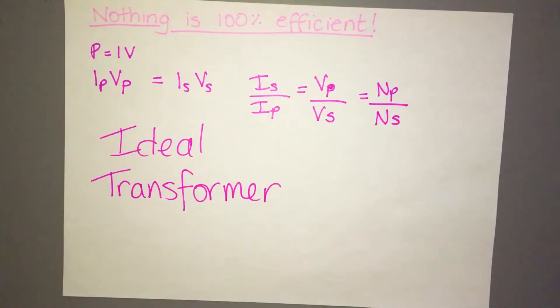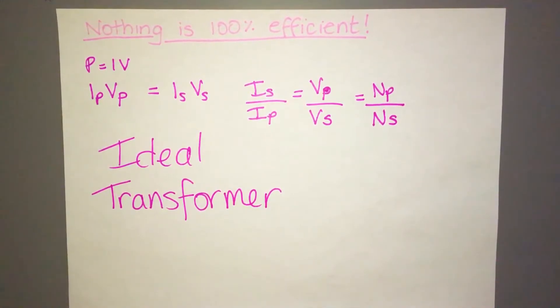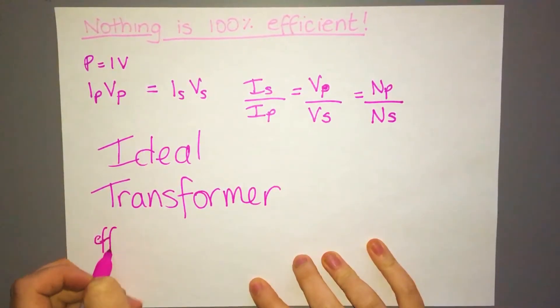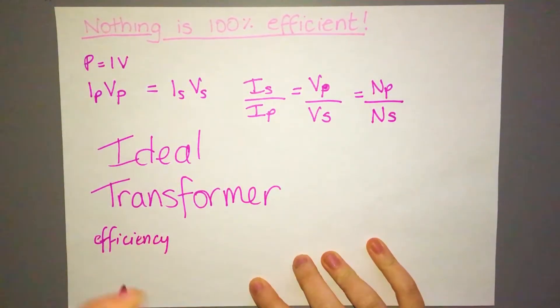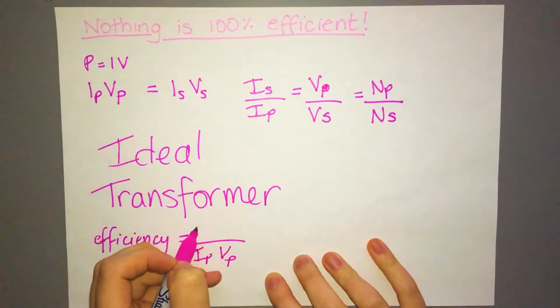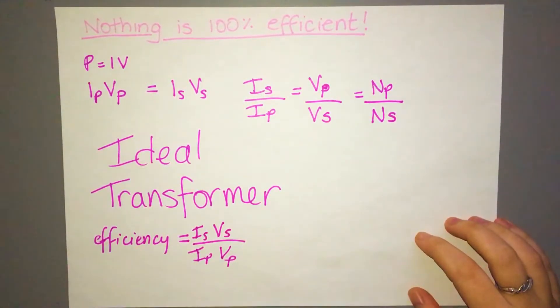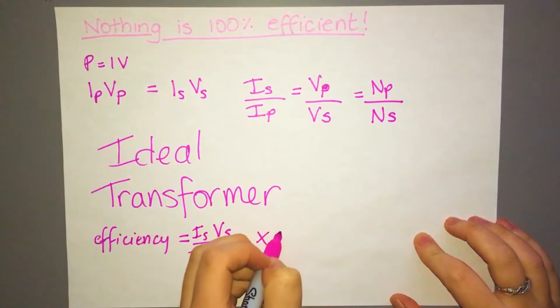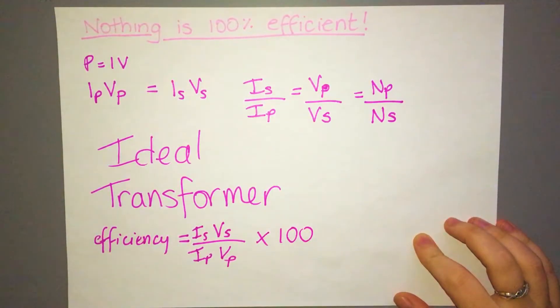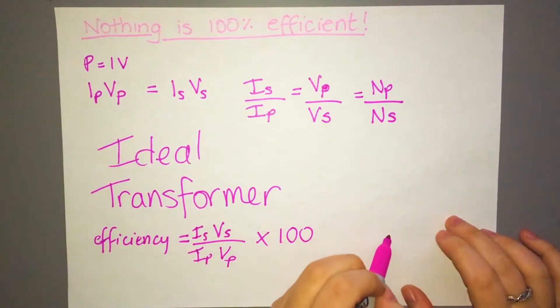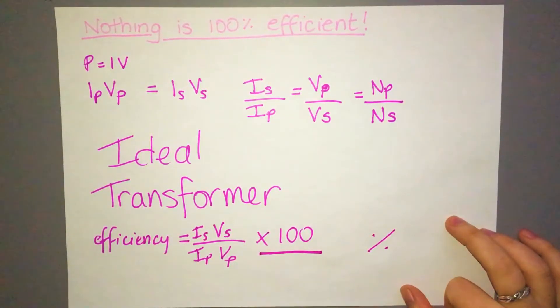However not all of them are going to be ideal, so if we're going to have to calculate the efficiency of our power in to our power out, then your efficiency, you should know, is what you're getting out divided by what you're putting in. So if this is what I'm putting in, it's going to be IP VP, and if that's what I'm getting out, that'll be in the top. So this is our way of finding efficiency. However, remember efficiency is a percentage so you'd always have to times it by 100 to get it as a percentage instead of as a single decimal. So just again be aware that when you're trying to find efficiency, don't forget to times it by 100.